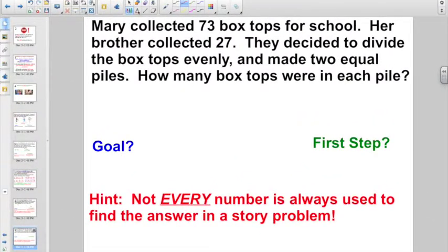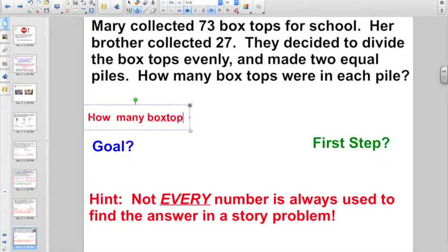Check out this one. Here it's saying, Mary collected 73 box tops for school. Her brother collected 27. They decided to divide the box tops evenly and made two equal piles. How many box tops were in each pile? So, your ultimate goal is to figure out how many box tops each kid gets if they divided them evenly and made two equal piles. That's our ultimate goal, right? How many box tops did each kid get? How many kids are we talking about? Do you have that part down yet? Looks like we have Mary and it looks like we have her brother, right? Do you have that picture in your mind? Two piles of box tops.